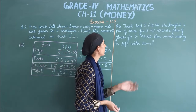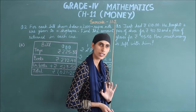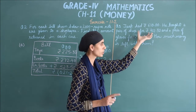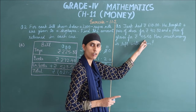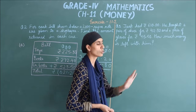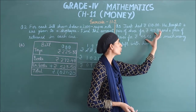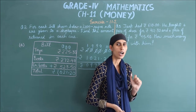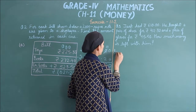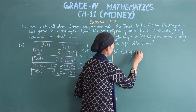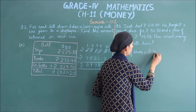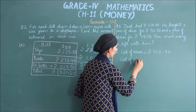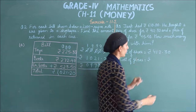Question 3: Jack had ₹610. He bought a pair of shoes for ₹412.30 and a pair of gloves for ₹45.50. How much money is left with him? First, we add the cost of both items. Cost of shoes: ₹412.30. Cost of gloves: ₹45.50. Write these down.